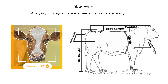Something else that breeders generally look at or use is biometrics. Biometrics is basically the analysis of biological data mathematically or statistically. Biometrics measures certain areas of the animal's body to identify the animal and also to try and figure out whether these characteristics are actually passed on to the offspring.